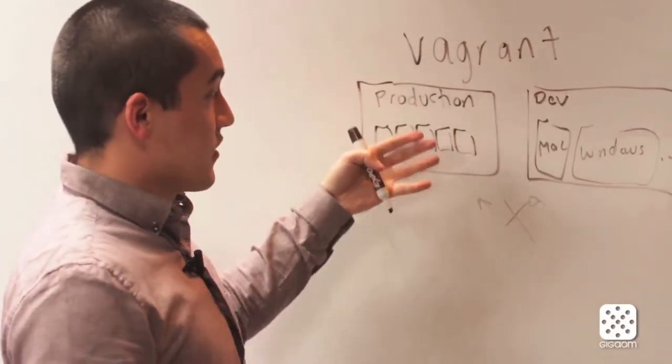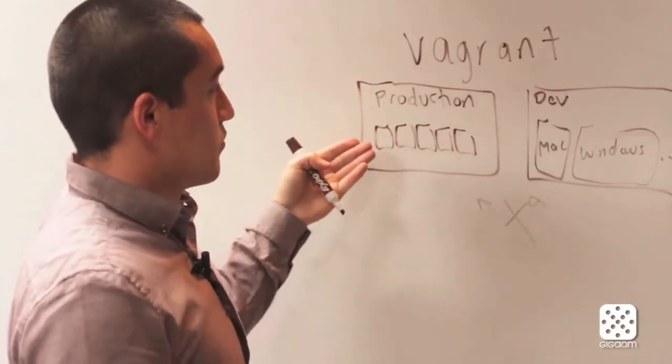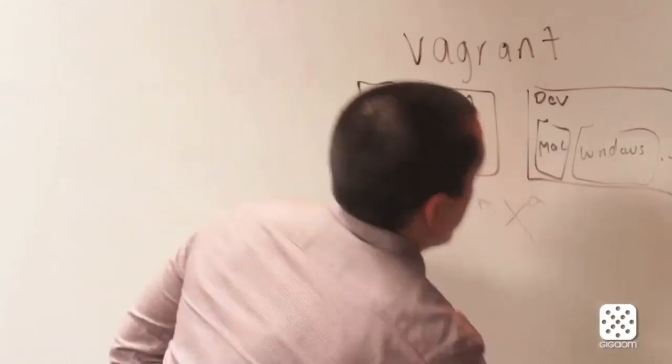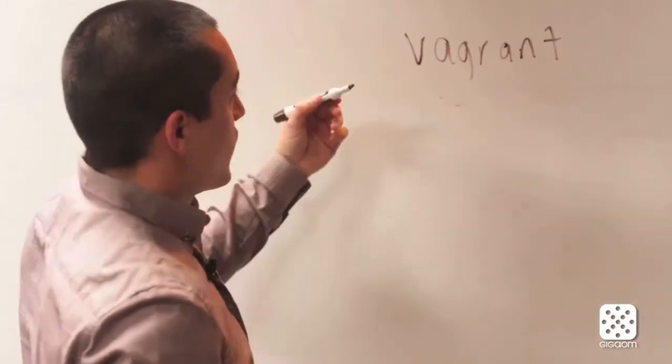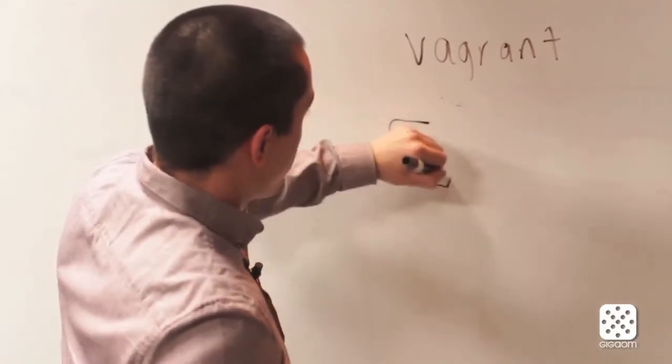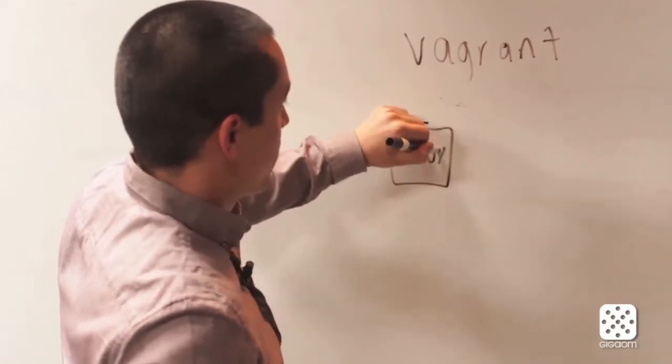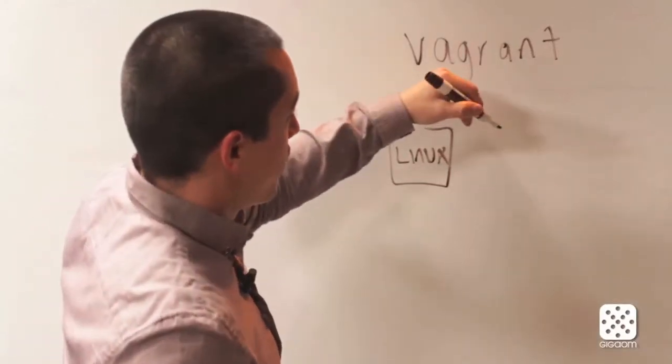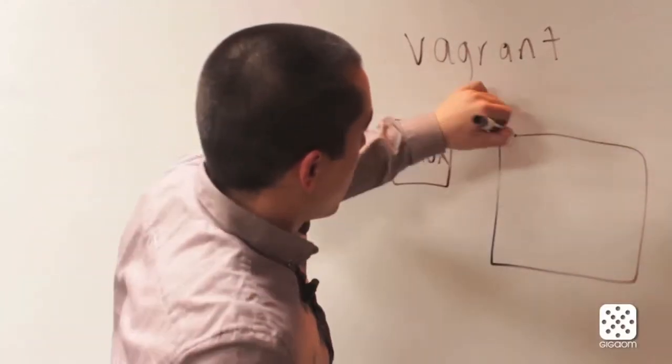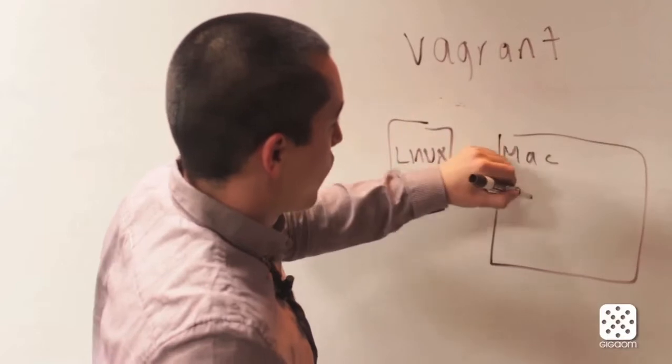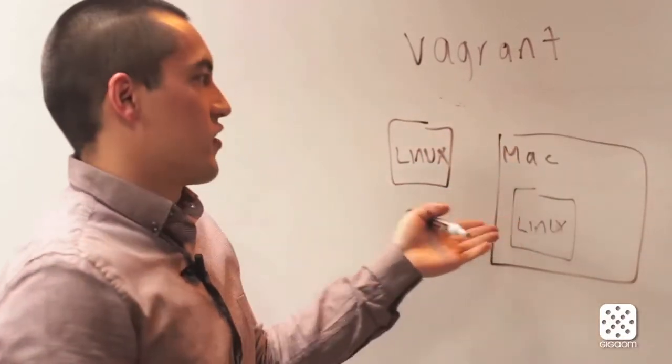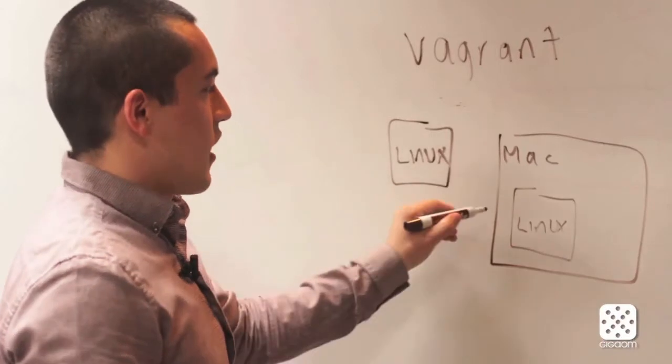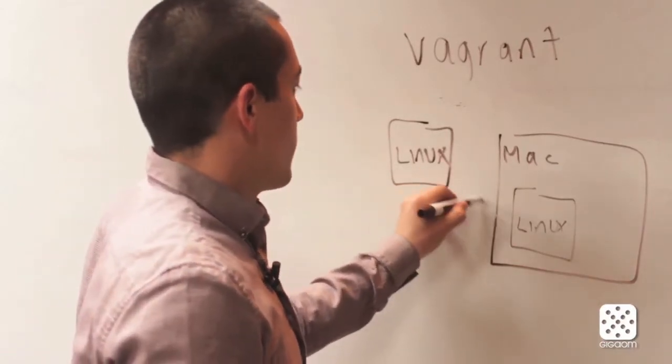I started making Vagrant, and what Vagrant does is make these identical. So now you have production running Linux machines, but then you also have developers running Mac but working inside a Linux virtual machine inside their Mac. This is automatically created so that these two things are equivalent.